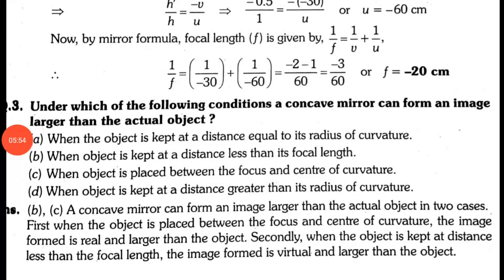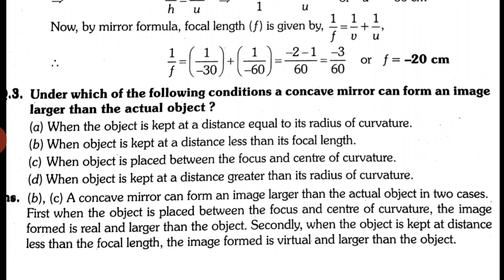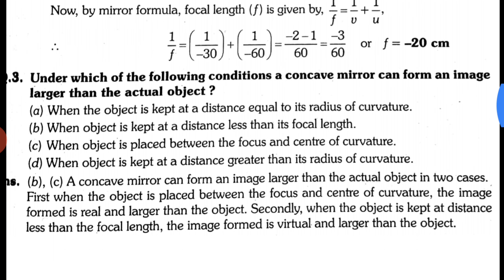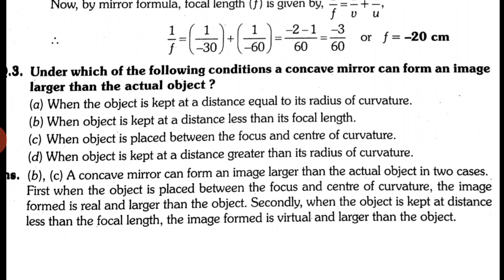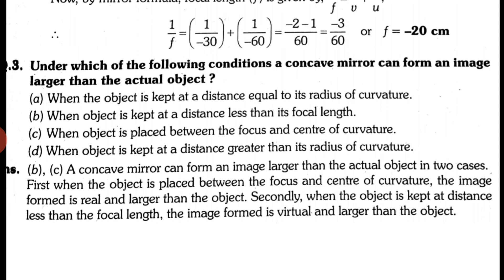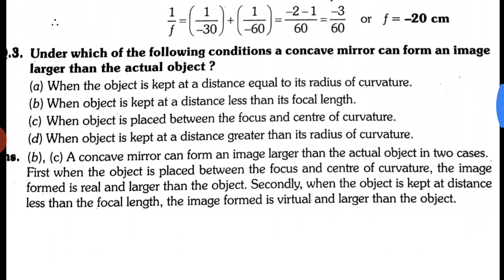Next question: under which conditions can a concave mirror form an image larger than the actual size? When the object is at the radius of curvature (C), the image is same size — not larger. When the object is between focus and pole, the image is magnified and virtual. When the object is between focus and center of curvature, the image forms beyond C and is also larger. So the answer is option B and C. These questions are important and often cause confusion in board exams.